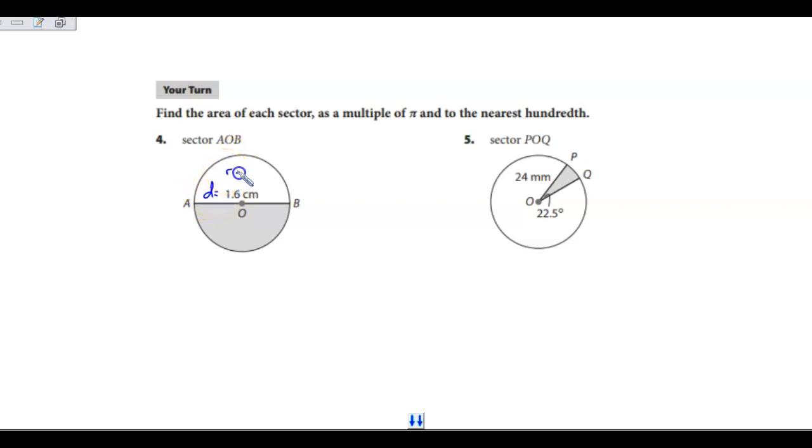If this is my diameter, my radius would be half of that, so it's going to be 0.8 centimeters. When I look at the gray area to find the measure of arc AB, I notice that this is half a circle, it's a semicircle. So I know that the measure is going to be 180 degrees.